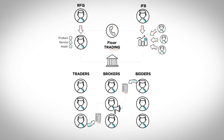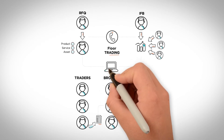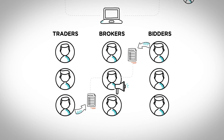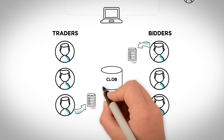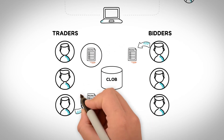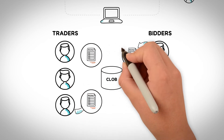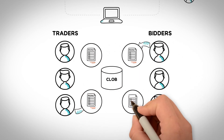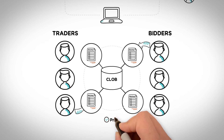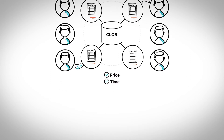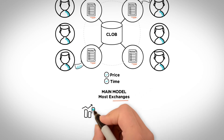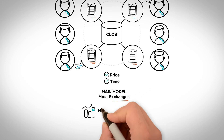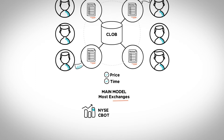Thankfully, computers revolutionized trading, and this is where the Central Limit Order Book comes into play. A CLOB provides a trade execution model based on a transparent system that matches customer orders — also known as bids and offers — on a price-time priority basis. A CLOB is one of the main models for most exchanges, specifically stock exchanges such as the New York Stock Exchange and Chicago Board of Trade.